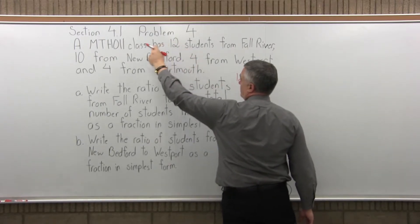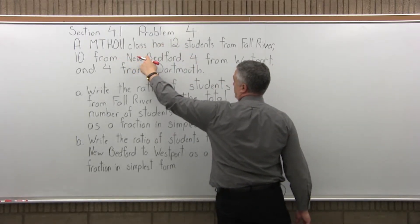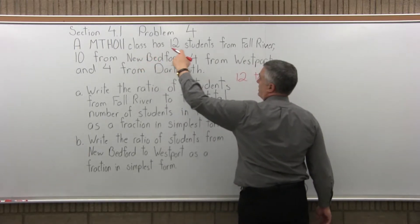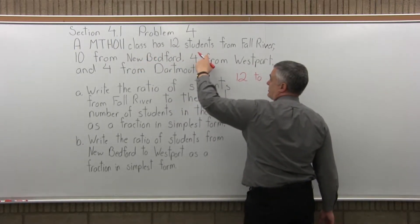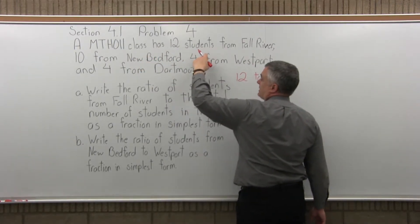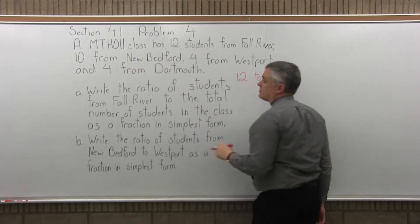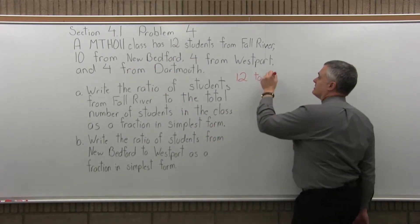Well, 12 from Fall River plus 10 more from New Bedford, that's 22. 22 plus 4 from Westport is 26. 26 plus 4 from Dartmouth is 30. Altogether, there are a total of 30 students in the class.